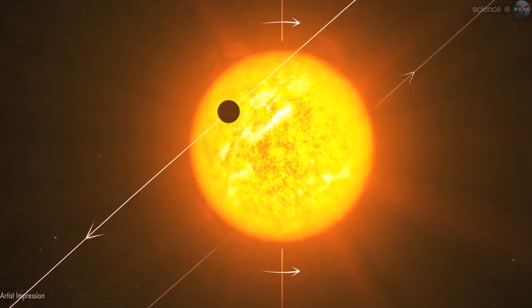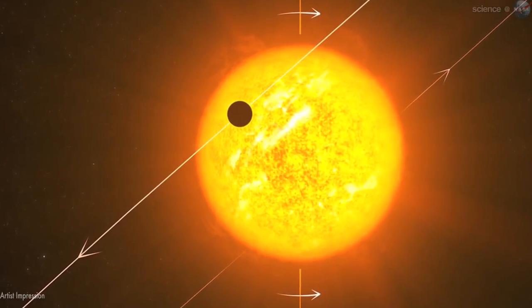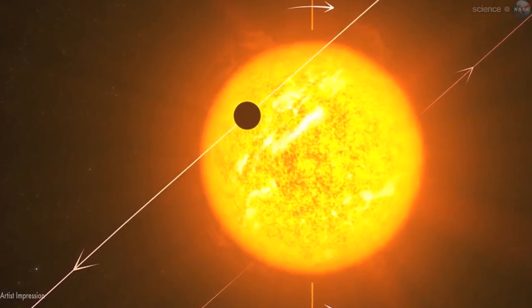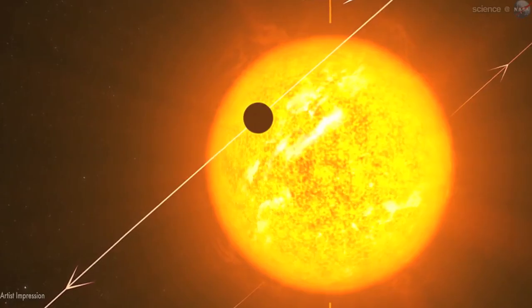Only a handful of known super-Earths, however, cross the face of their stars as viewed from our vantage point in the cosmos. So 55 Cancri e is better understood than most.